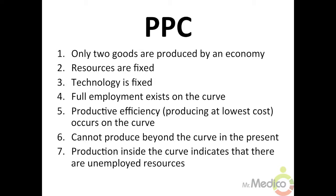Number three: What are the assumptions of the production possibilities curve? The production possibilities model illustrates opportunity costs graphically. In this simplified model we make the following assumptions: one, only two goods are produced by an economy; two, resources are fixed; three, technology is fixed; four, full employment exists on the curve; five, productive efficiency — which means producing at lowest cost — occurs on the production possibility curve.